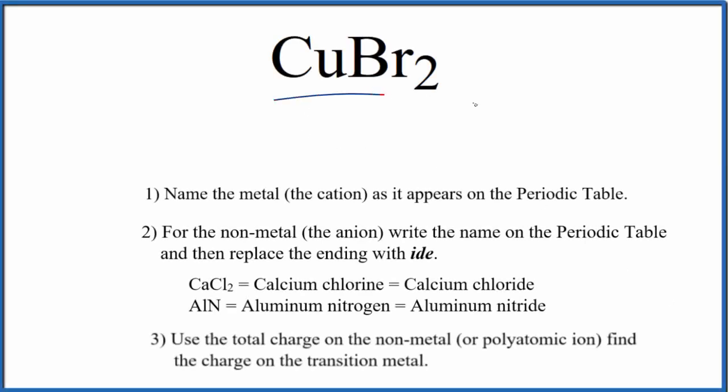To write the name for CuBr2, first we need to recognize we have this transition metal here, and then a nonmetal. So we're going to treat this as an ionic compound.